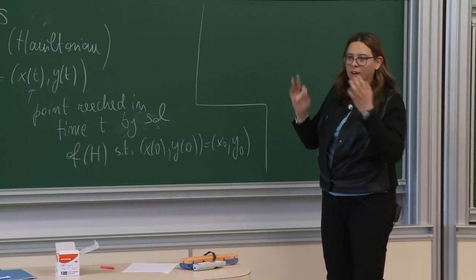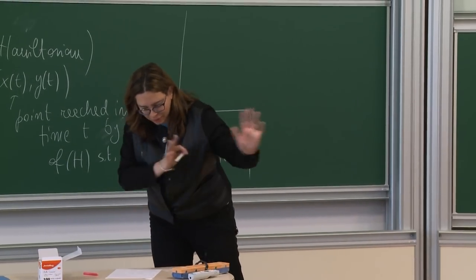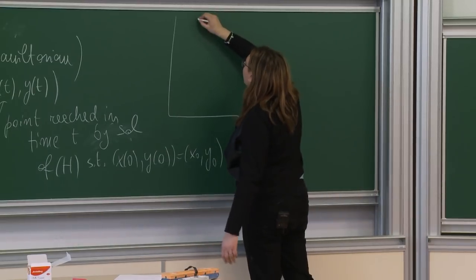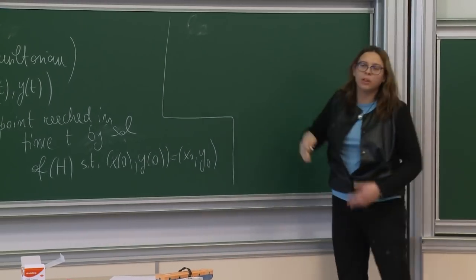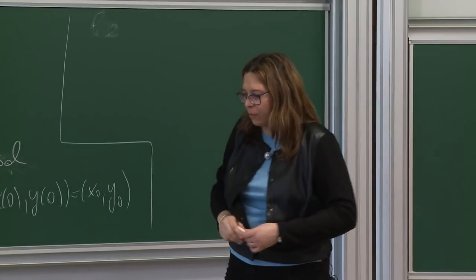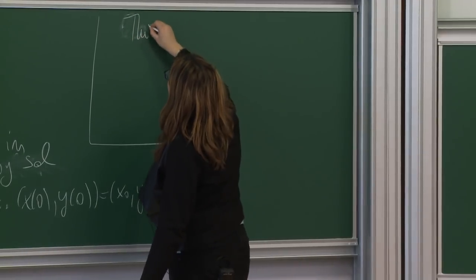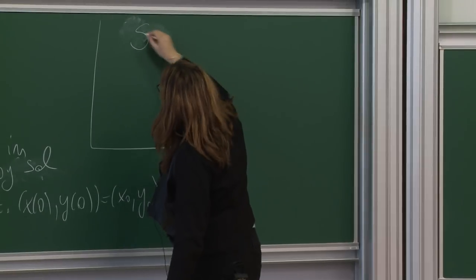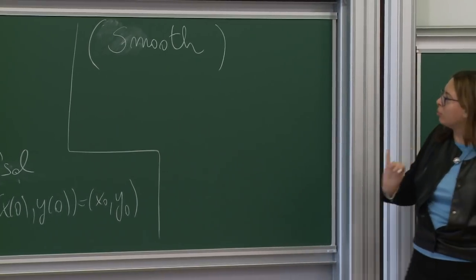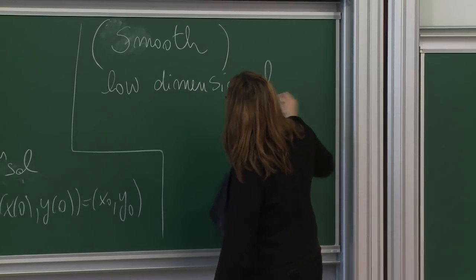Hamiltonian systems appear in many problems in mathematical physics and celestial mechanics, but that is not the topic of this course. More generally, you could have a manifold with a vector field and look at the integral curves, which also define a flow. We want to focus on smooth, low-dimensional dynamical systems.